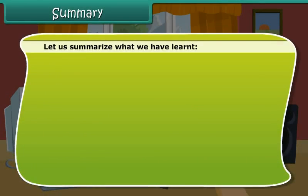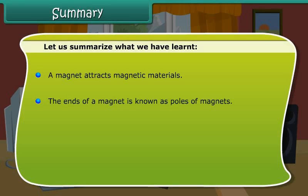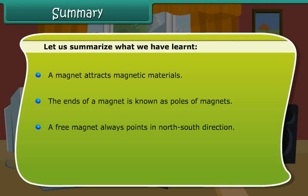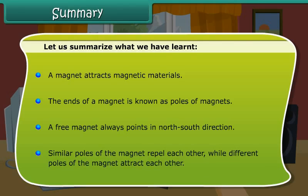Let us summarize what we have learned. A magnet attracts magnetic materials. The ends of a magnet are known as poles of magnets. A free magnet always points in the north-south direction. Similar poles of the magnet repel each other, while different poles of the magnet attract each other.